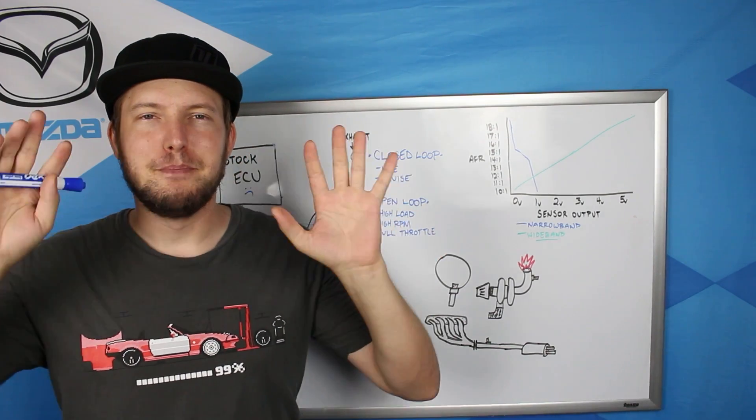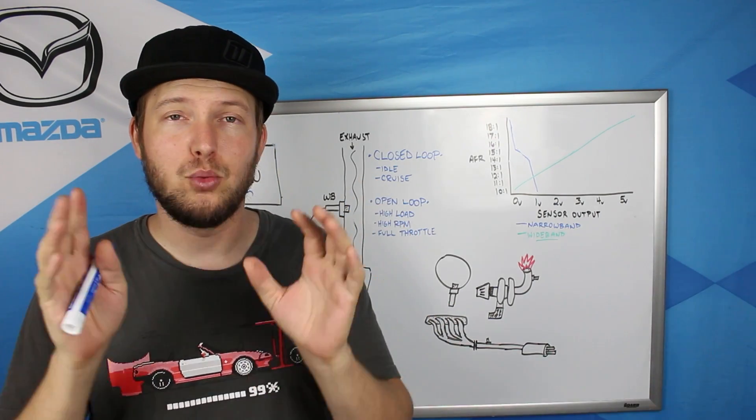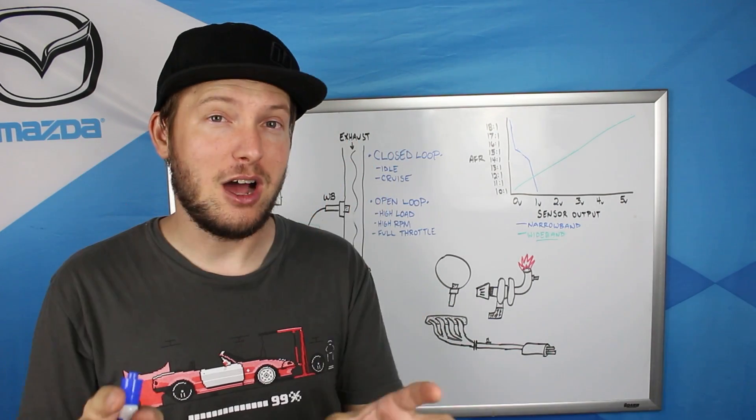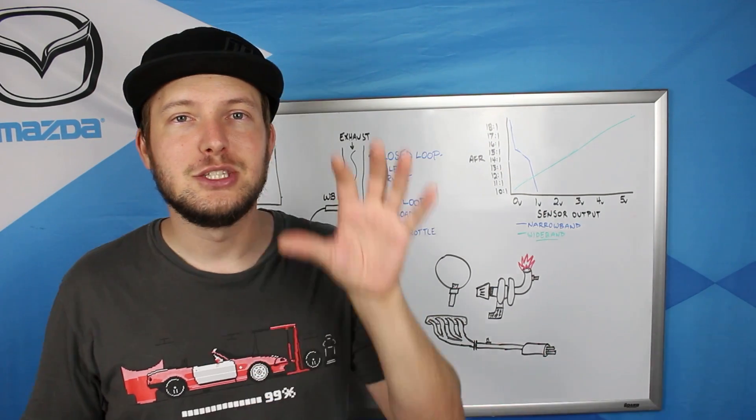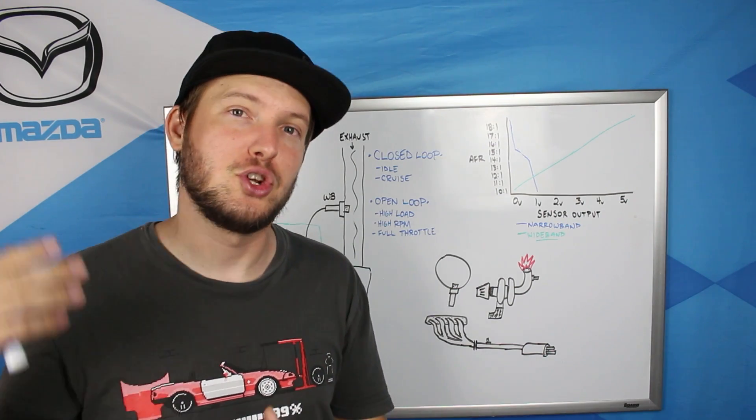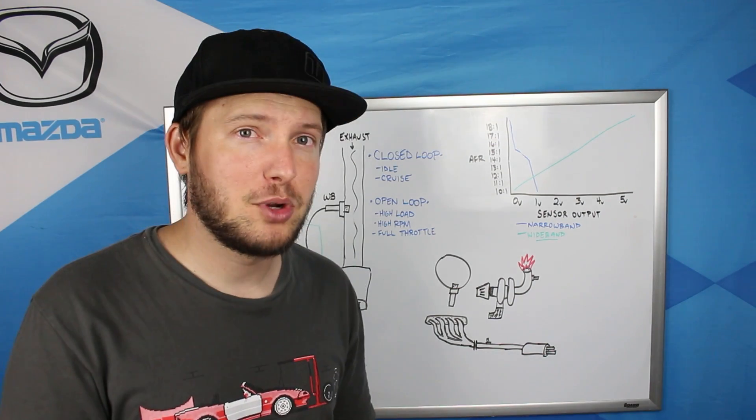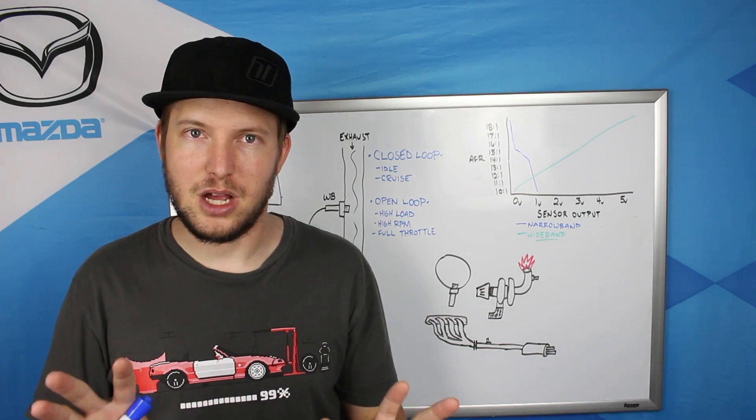So this is my first major PSA of this video. If you've just installed a wideband system in a stock ECU car and all of a sudden the car is running way too rich or way too lean during idle, you have probably not hooked up the narrowband emulation correctly. Because if you do hook it up correctly, the car is going to idle and cruise completely as if it were stock.